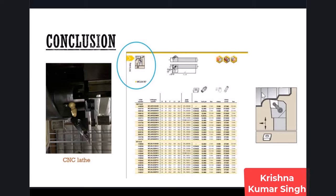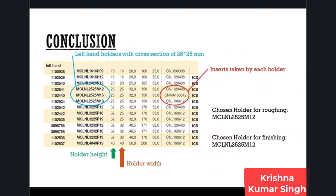For lathe tool holders, we will use left-hand holders with cross sections of 25 mm by 25 mm. There are three left-hand holders - one accepting insert size 12, another size 6, and a third size 9. All holders accept inserts in the shape of an 80-degree or C-type insert. For size 12, I will choose the holder MCLNL-2525M. I will choose two holders: one for roughing and one for finishing.